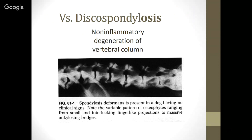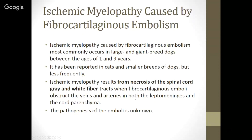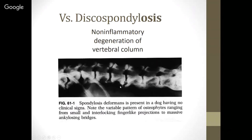Spondylosis deformans is a non-inflammatory degeneration of the vertebral column, very different from discospondylitis. It presents as ankylosing bony bridges between vertebrae that keep the spine from moving as freely. We often find it incidentally on x-rays taken for other reasons. Pain is typically only seen if there is a fracture at the site of bridging.